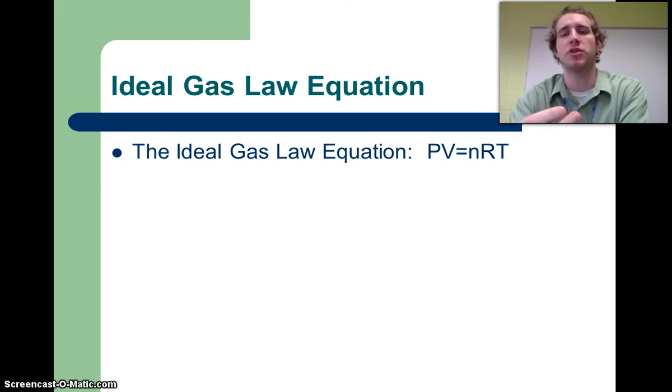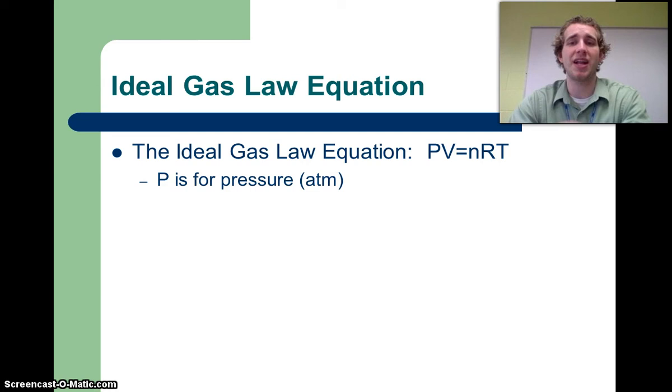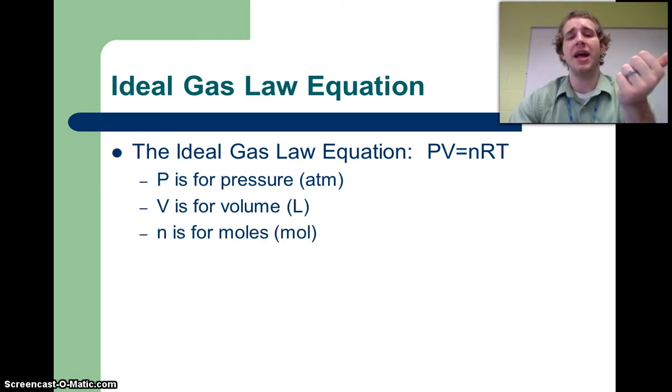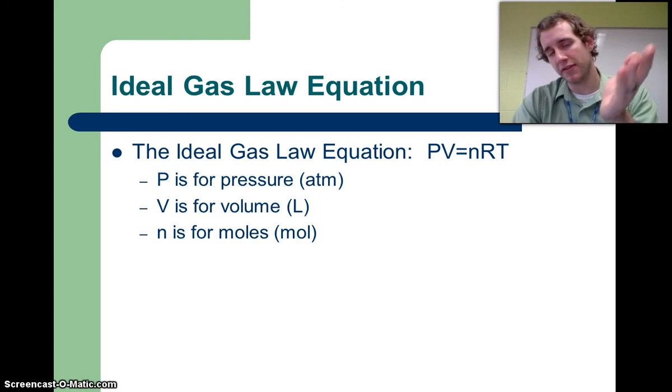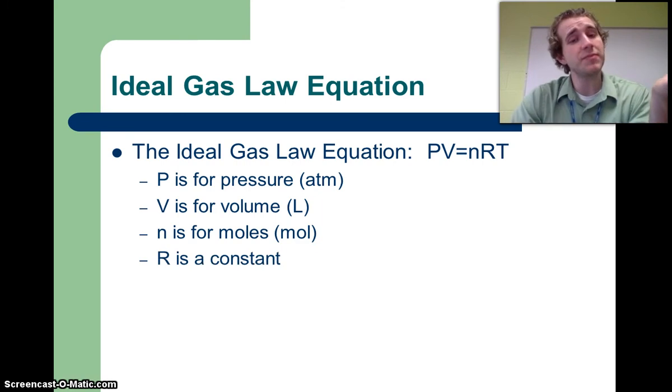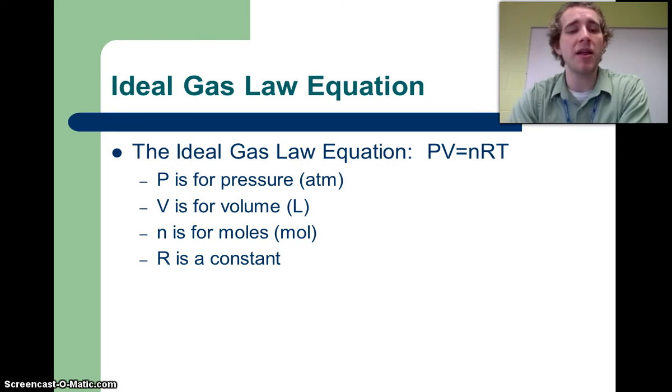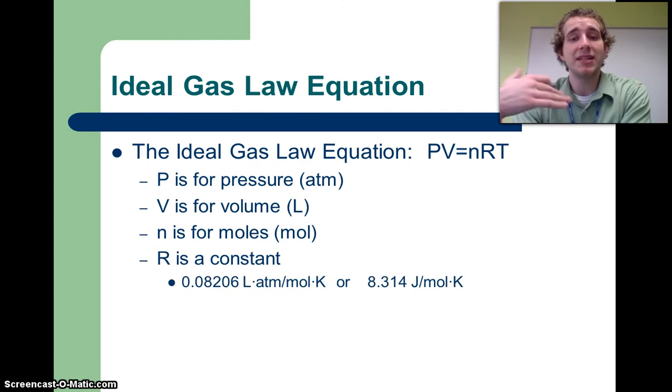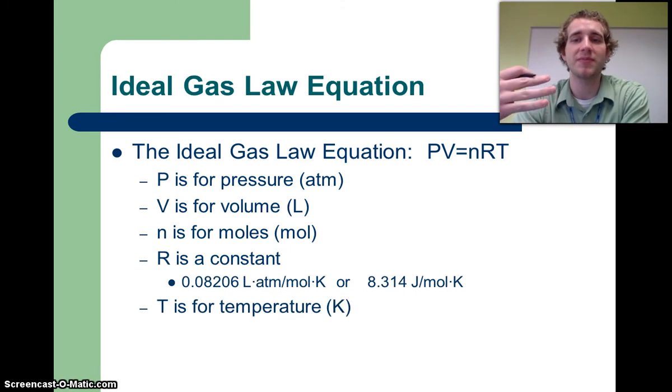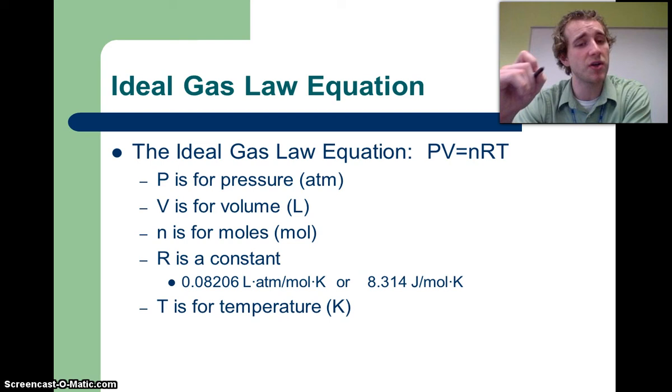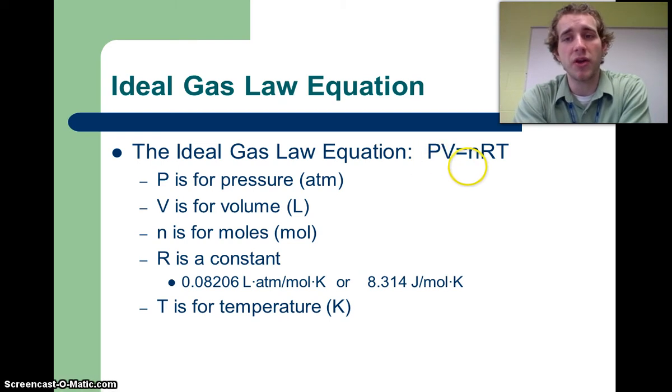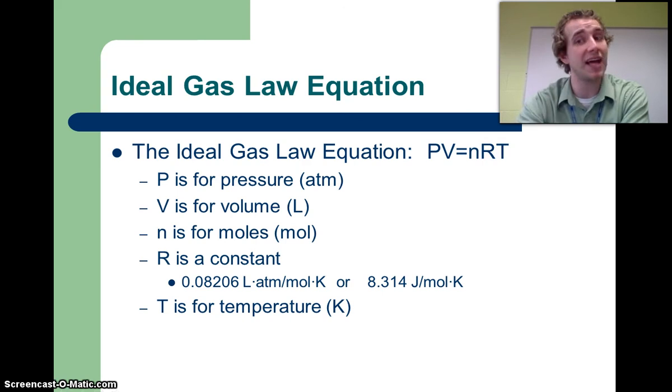P stands for pressure. For the ideal gas law you have to be in atmospheres, otherwise it will not work. V has to be in liters for volume. n is for the number of moles in the unit mole. R is a constant, a mathematical constant that will never change. It's just like h, Planck's constant, or c, the speed of light. T is for temperature. Temperature has to be in Kelvin.